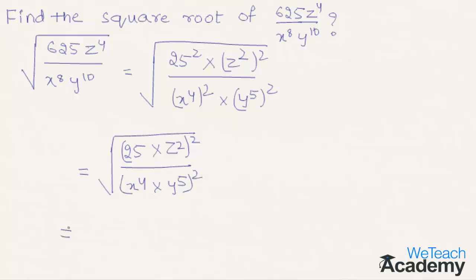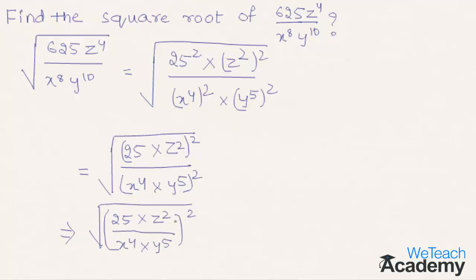This implies the square root of (25 z squared divided by x power 4 y power 5) whole square. The square and root get cancelled and we get the square root as 25 z squared divided by x power 4 y power 5.